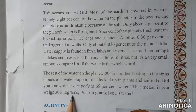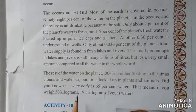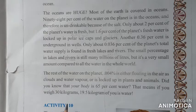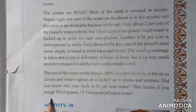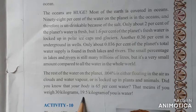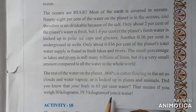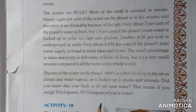If your weight is 30 kg, then 19.5 kg of you is water. That means if your total weight is 30 kg, then 19.5 kg of your body is made up of water. Water, water everywhere!